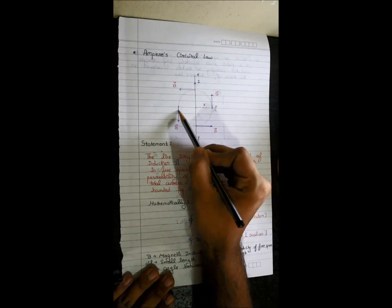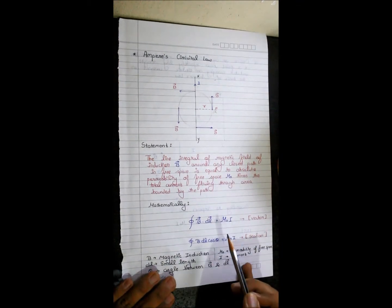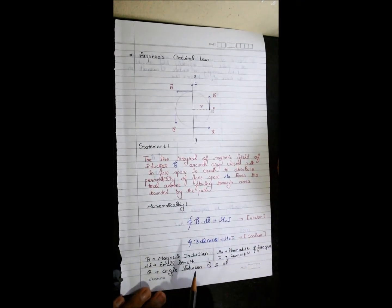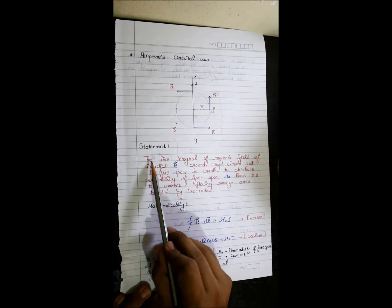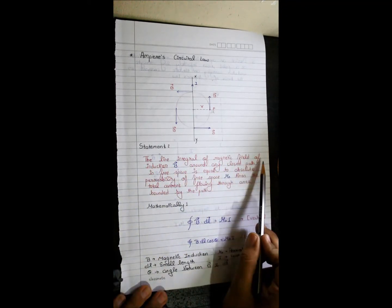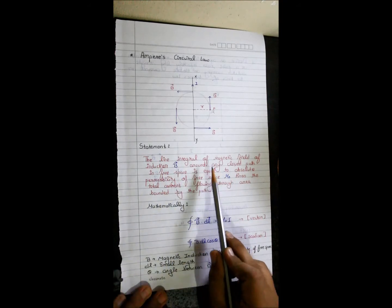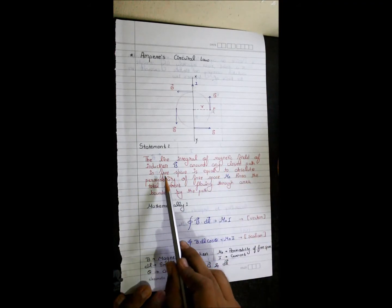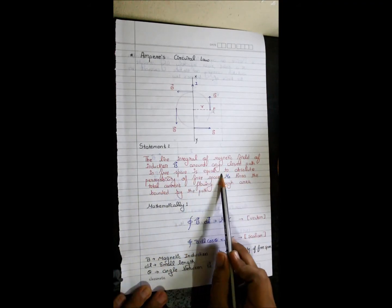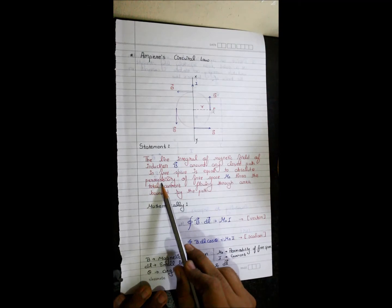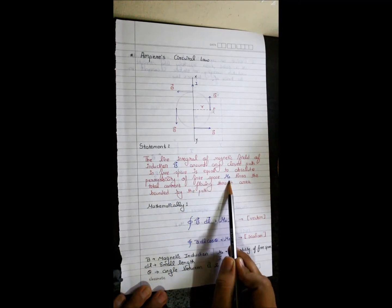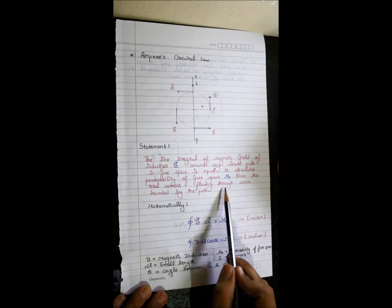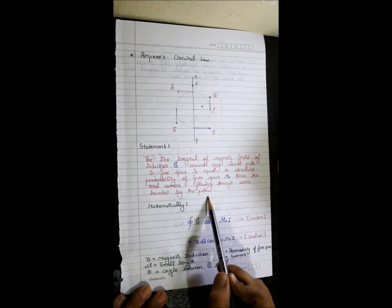At any point I take, my magnetic field will be tangent to the circle. The basic statement of Ampere's law tells us: the line integral of magnetic field of induction B around any closed path in free space is equal to the absolute permeability of free space, that is μ₀, times the total current flowing through the area bounded by the path.